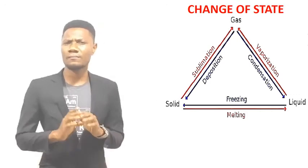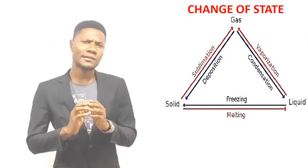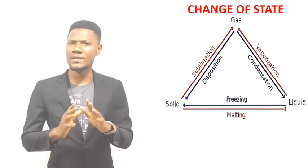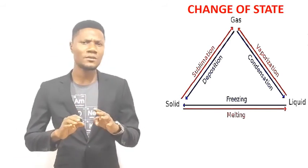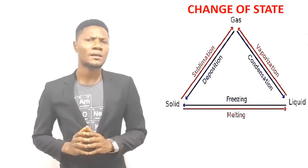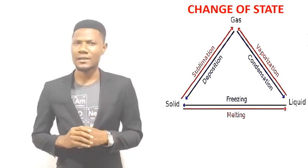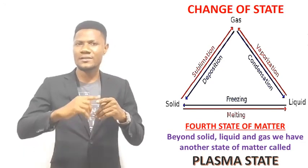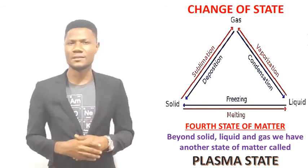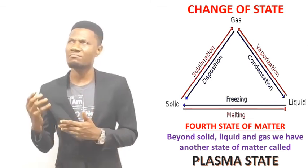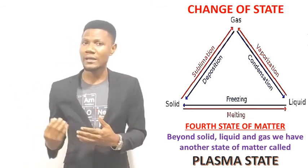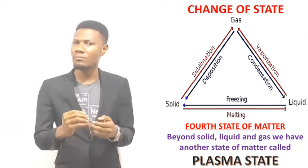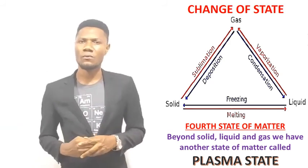Before I wrap up this lesson, I'd like to mention another state of matter that is not often discussed — I'm going to dedicate another video for it. That state of matter is called the plasma state. It's a fourth state of matter. After solid, liquid, and gas, there is another state called the plasma state. A good example is lightning. Lightning is a plasma state of matter. The plasma television is able to function because of the plasma state of matter.